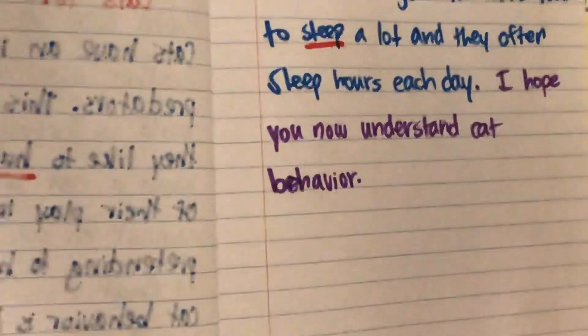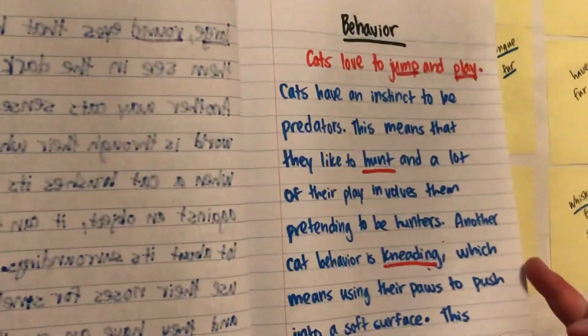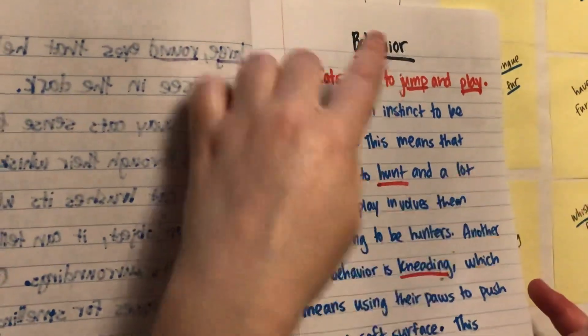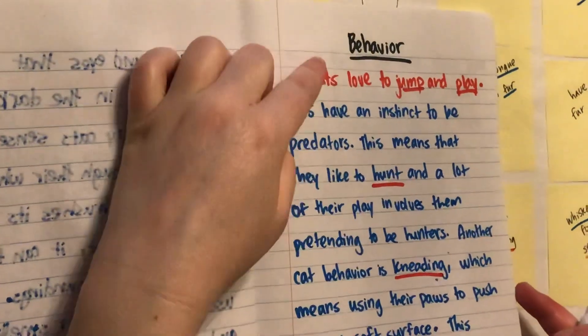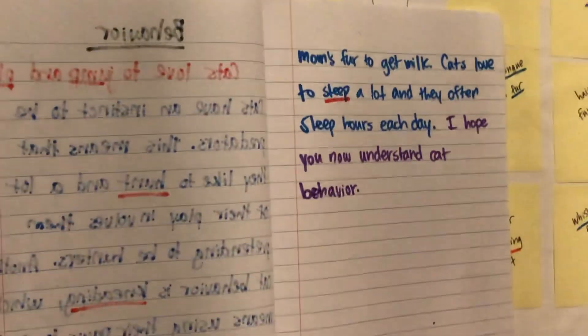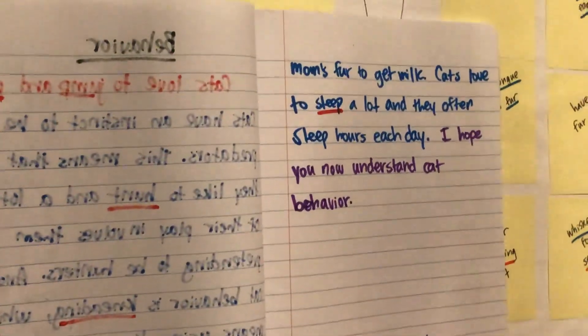Okay, second graders. I want you to write the next paragraph in your book. Make sure you have a heading, topic sentence, details, and a concluding sentence. Okay, bye.